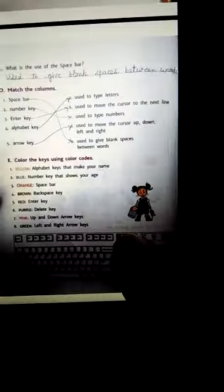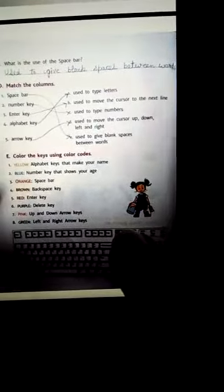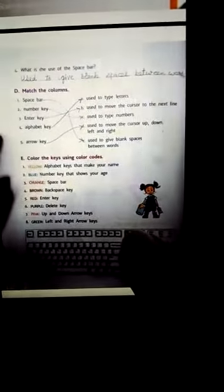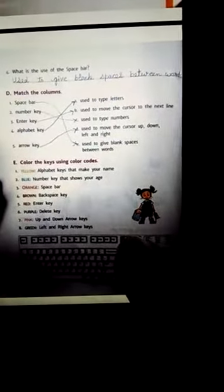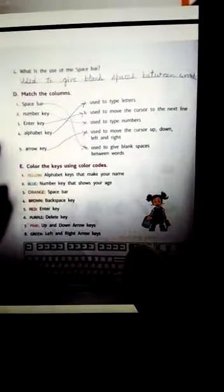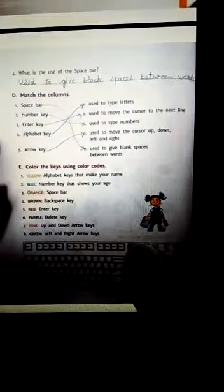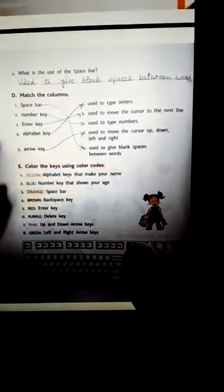Arrow key - used to move the cursor up, down, left and right. Arrow keys are used for up, down, right, left arrow. Arrow keys are used for this.